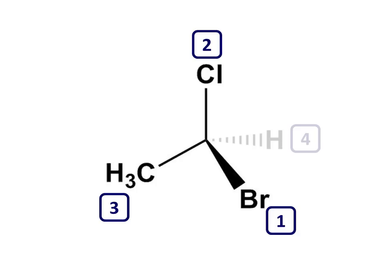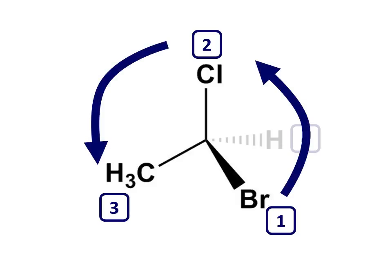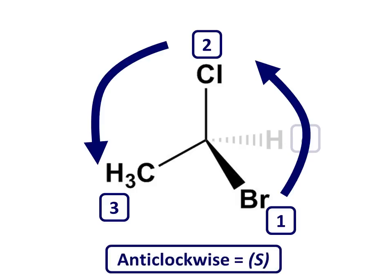Step three, the last step, is to read the three groups pointing towards you, from highest priority bromine, to second highest priority chlorine, to third highest, methyl. If this sequence takes you in an anti-clockwise direction, you are looking at the S enantiomer. You might like to remember that anti-clockwise is a bit anti-establishment, and perhaps a little sinister, which starts with an S.